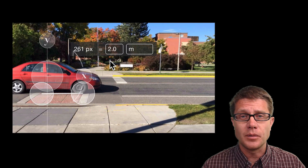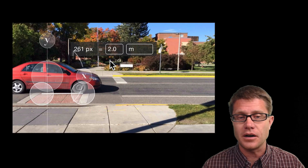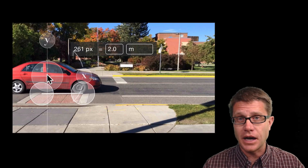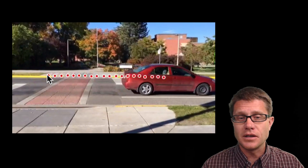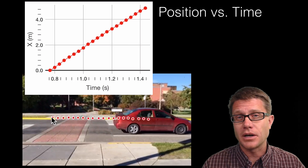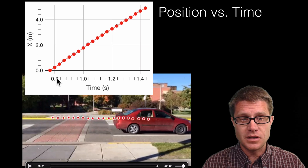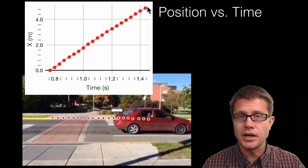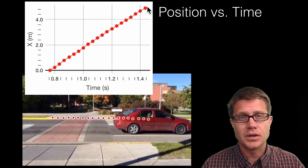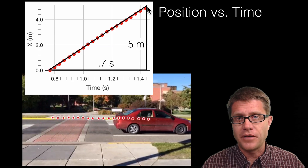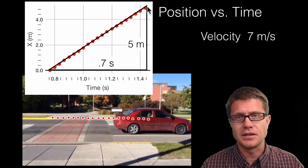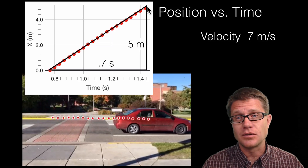I used a piece of software called Video Physics and my phone, and I went out and filmed a few things. Here I have a car. I set up the scale at 2 meters, set the origin at the center of mass of the car, filmed it, and marked the center of mass. The center of mass is moving an equal amount over a given time. When we graph it we get a position versus time graph that is a straight line — meaning constant velocity to the right. We can calculate the speed: with about a 5 meter rise and a 0.7 second run, dividing gives a velocity of around 7 meters per second, which is about 20 miles an hour.